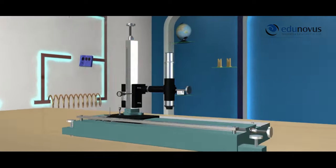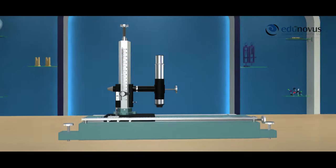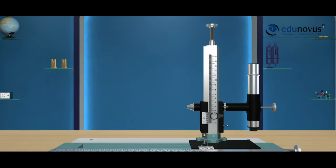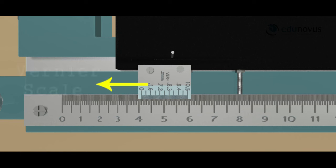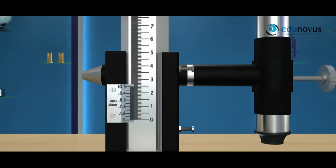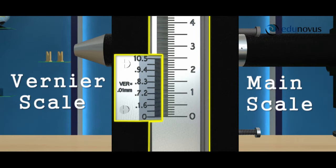A traveling microscope is a compound microscope fitted vertically on a vertical scale. The base of the traveling microscope consists of leveling screws which help in adjusting the base horizontally. You can see the horizontal main scale and vernier scale, as well as the vertical main scale and vernier scale. At any given position, readings are taken by combining the main scale and vernier scale readings.